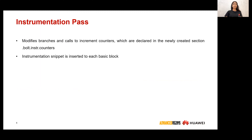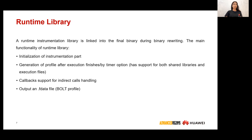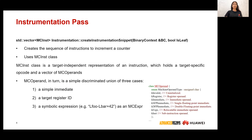The main goal of the instrumentation pass is to modify the input binary so it can generate a profile. It inserts instrumentation snippets for each basic block, modifies branches and calls to increment counters, which are declared in a separately created section. The runtime instrumentation library is linked into the final binary during binary rewriting. Its main functionality includes initialization, generation of the profile after execution finishes or via a term option, callback support for indirect call handling, and output of the fdata file, which is the Bolt profile.